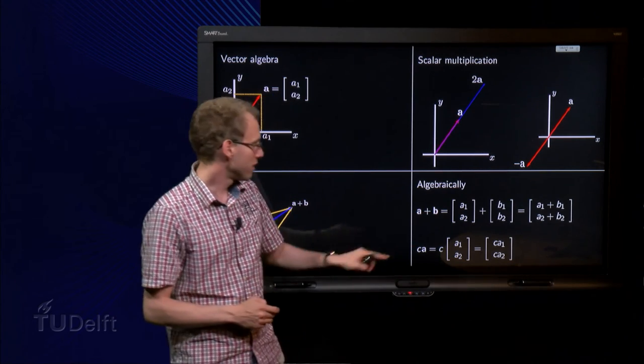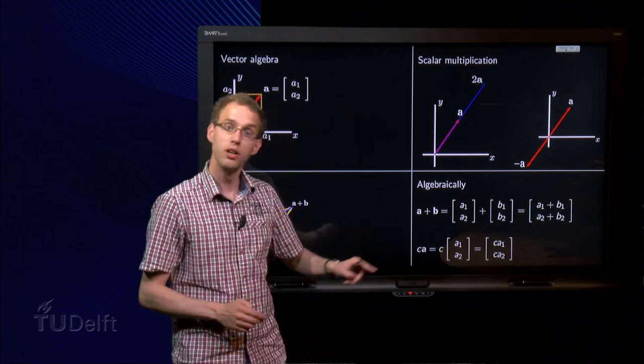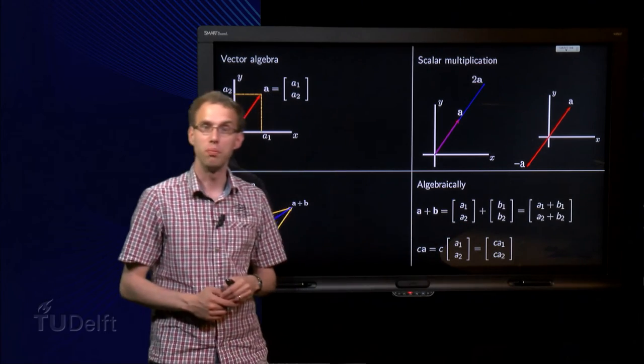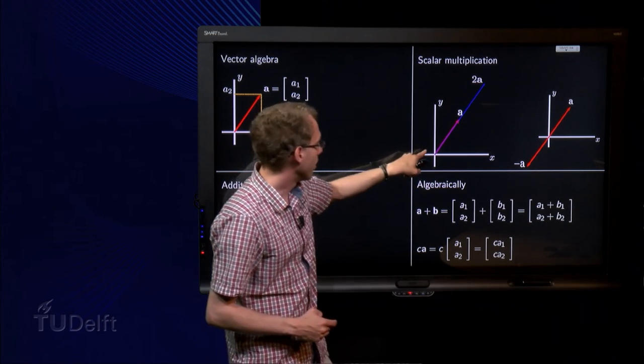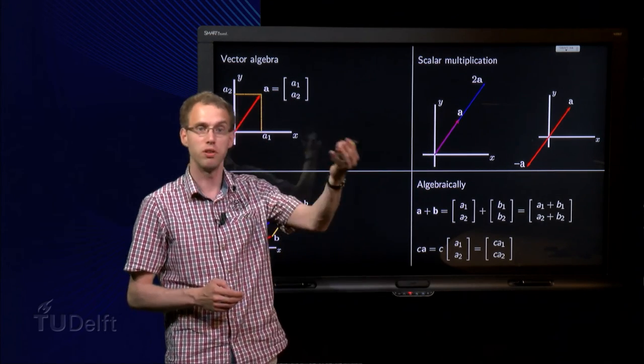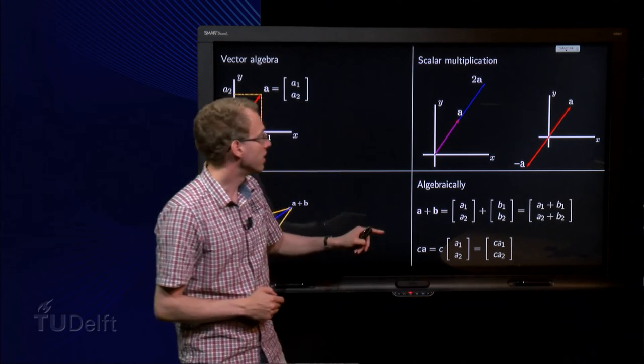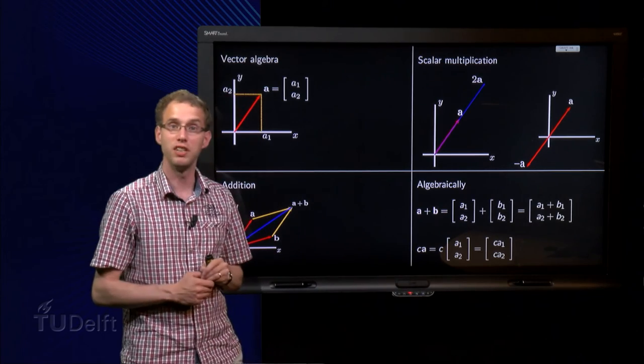Scalar multiplication, C scalar times vector A, C times A1, A2, you just multiply both components of the vector, which corresponds, like here, if you compute 2 times A, you get 2 times A1 and 2 times A2. So that is exactly the same as the geometric definition over here.